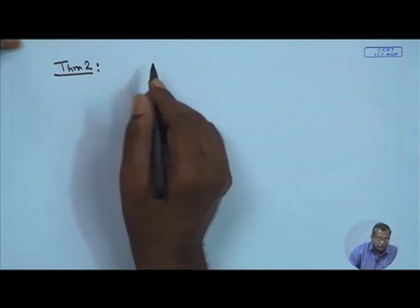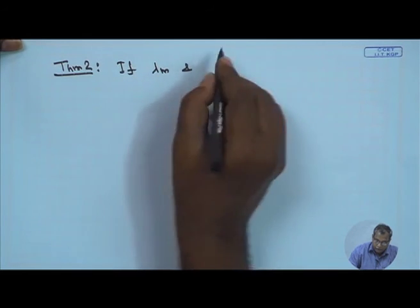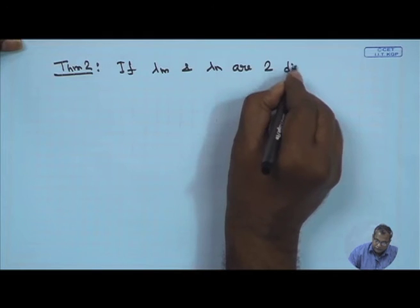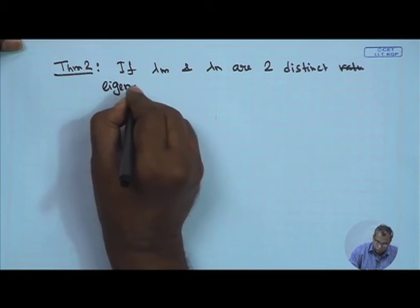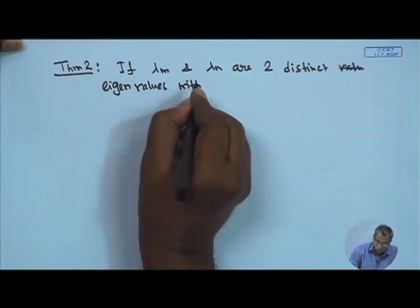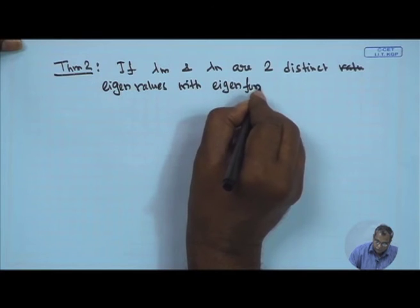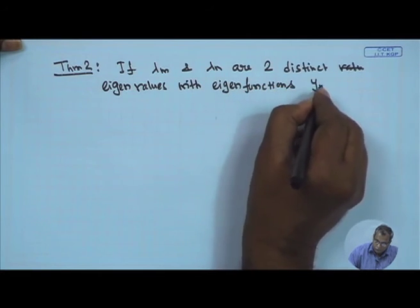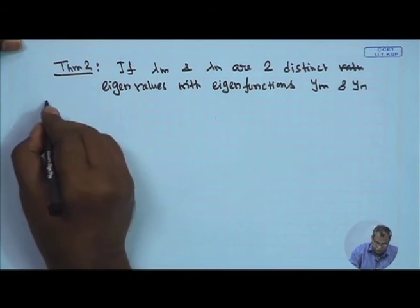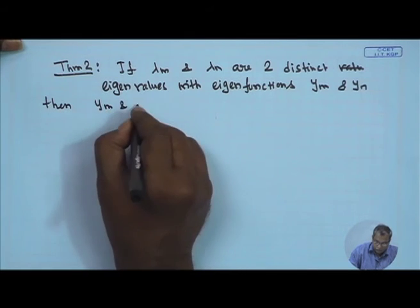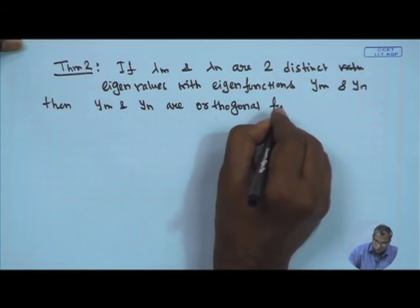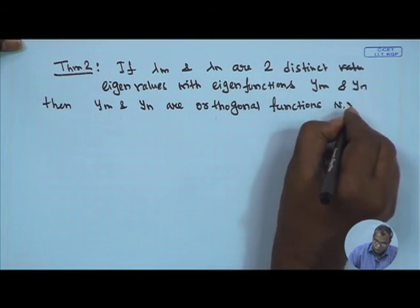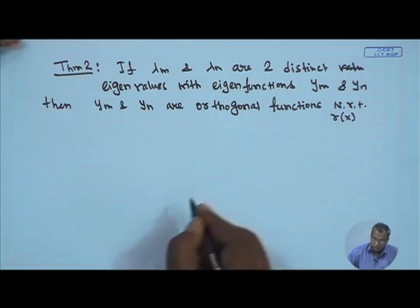The next theorem: if λₘ and λₙ are two distinct eigenvalues of the Sturm-Liouville problem with eigenfunctions yₘ and yₙ, then yₘ and yₙ are orthogonal functions with respect to the weight function r(x). Let us look into this theorem and its proof.